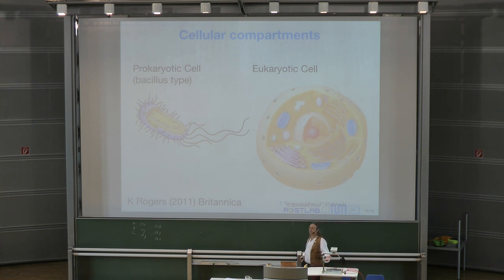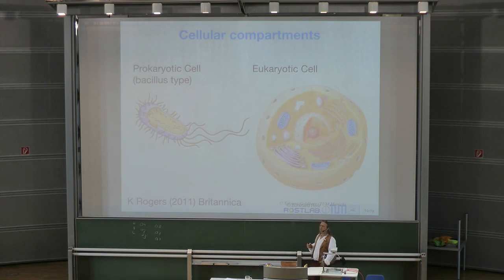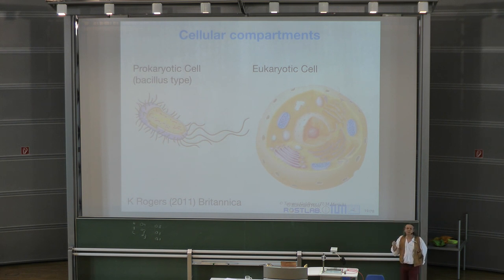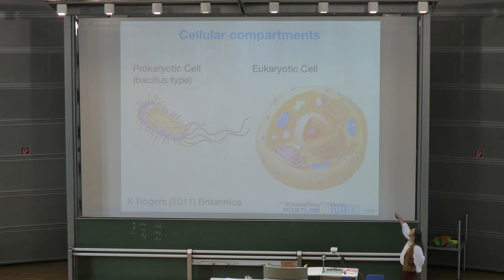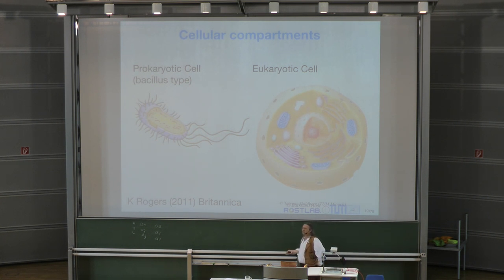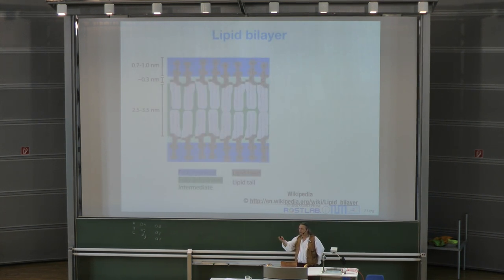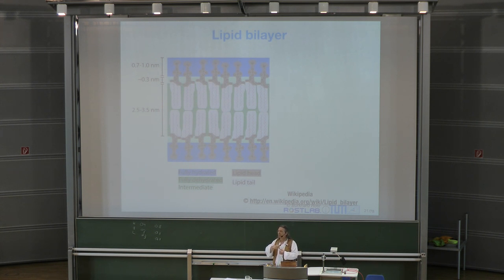The way you separate inside from outside is by using the lipid bilayer. Bi means two — two layers of lipid. The head group faces the outside and is hydrophilic on both sides, dissolving in water. In between you have the hydrophobic tails. The typical span of a membrane is about three nanometers.